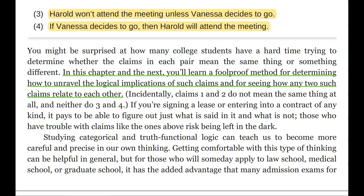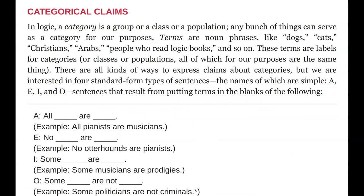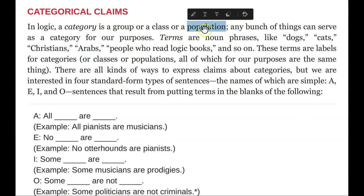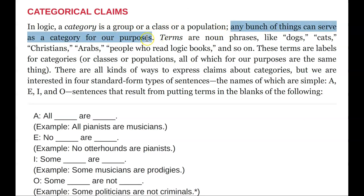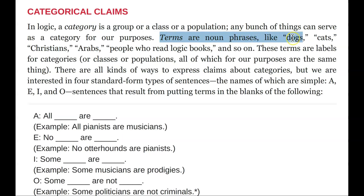Right into the nitty-gritty — categorical claims. In logic, a category is a group, class, or population. Terms are noun phrases like dogs, cats, Christians, Arabs, people who read logic books, and so on.